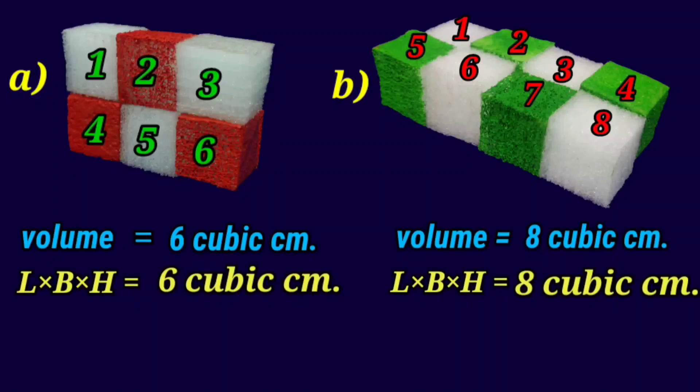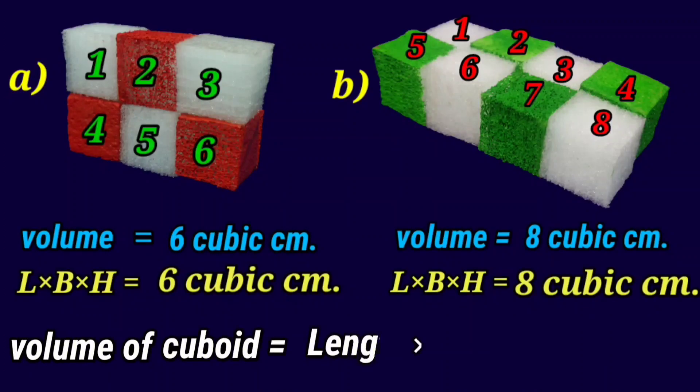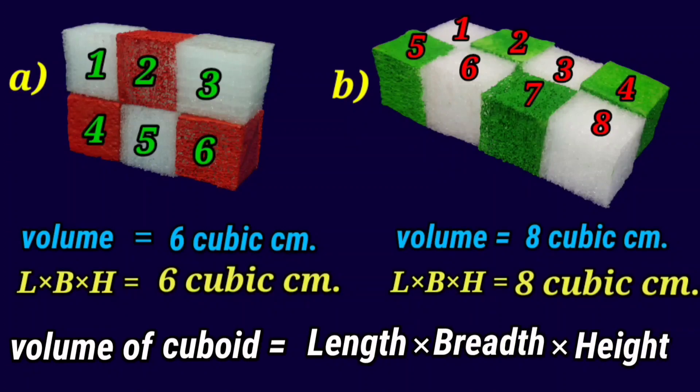When we look carefully, we notice that the volume counted with the help of number of cubes is equal to the multiplication of its length, breadth and height. So we conclude that volume of each cuboid is equal to length multiplied by breadth multiplied by height.